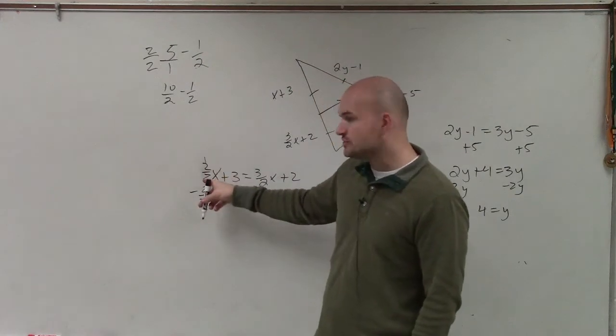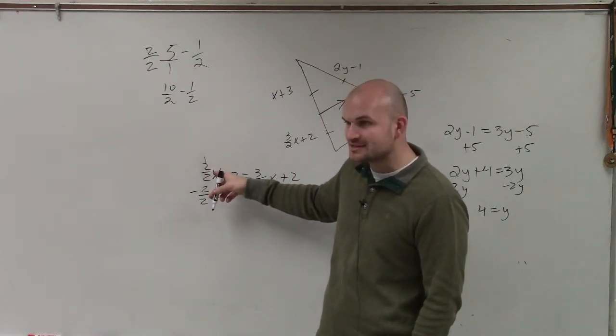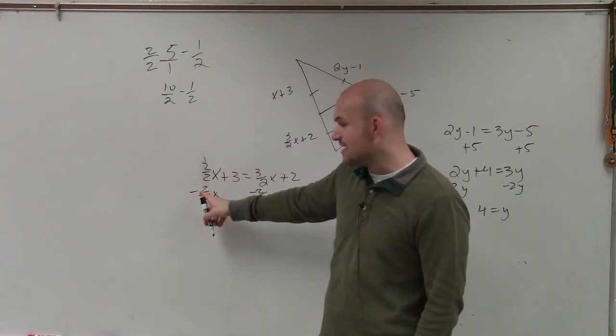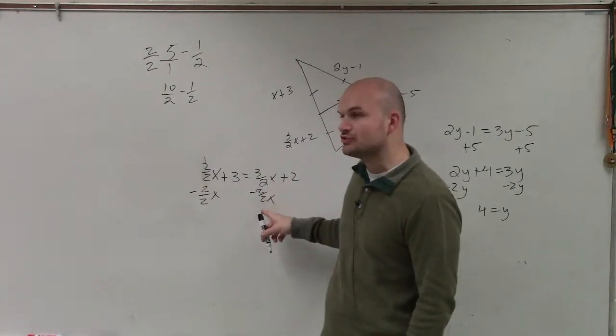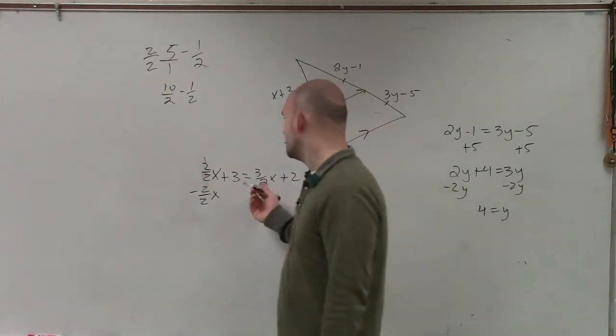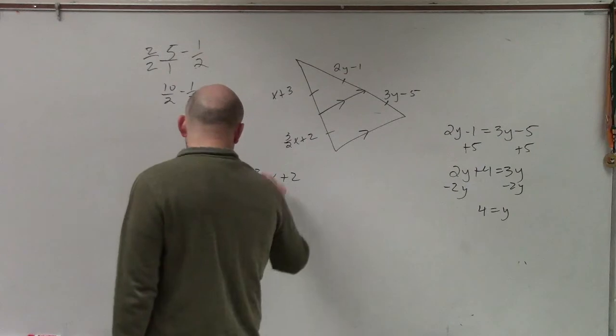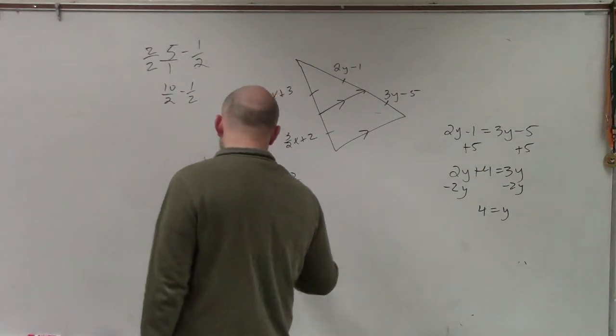And that's what I was saying here. 2 over 2x is the exact same thing as x. But I wrote it in that form, multiply by 2 over 2, so I could subtract it from the 3 halves. Then I have 3 equals 1 half x plus 2.